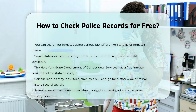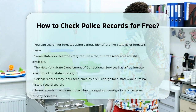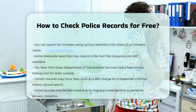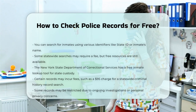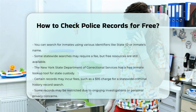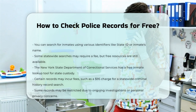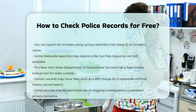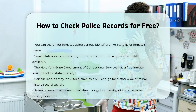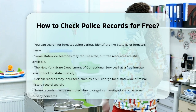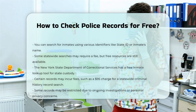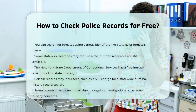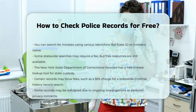Limitations and fees. It's important to note that while some initial searches are free, certain records may require a fee to access or obtain printed copies. For example, a statewide criminal history record search through the New York State Office of Court Administration (OCA) costs $95, and some records may be restricted due to ongoing investigations or personal privacy concerns.